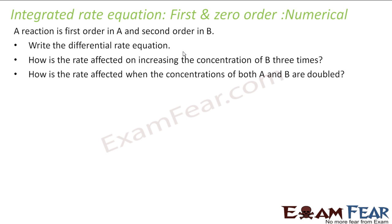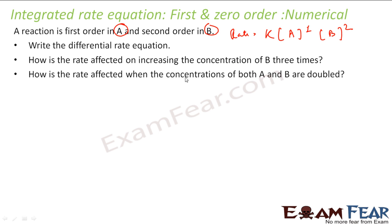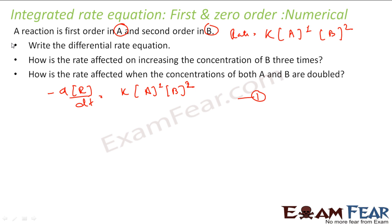The next question says the reaction is first order in A and second order in B. That means rate = k × [A]¹ × [B]². First, find the differential rate equation. Instead of rate, we write −d[A]/dt = k × [A]¹ × [B]². That is the differential rate equation.